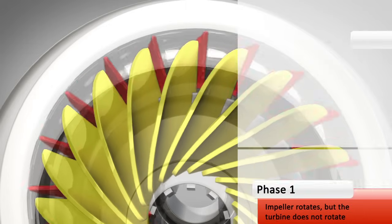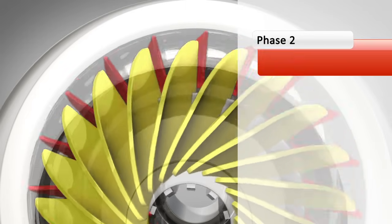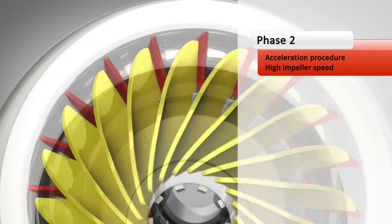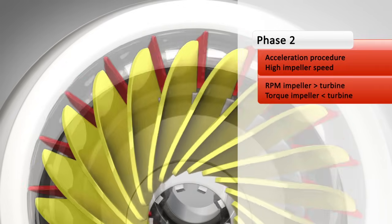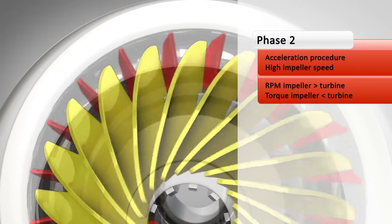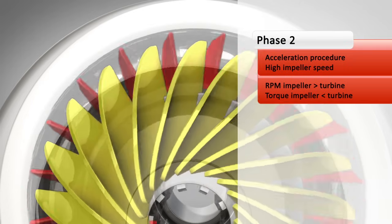The second phase is called acceleration, and takes place when the traffic lights turn green. The brakes are not applied, and the driver presses the accelerator pedal. Consequently, the impeller rotates faster, but there is a relatively large difference between impeller and turbine speed. Under this condition, the converter produces torque multiplication. For acceleration, this torque multiplication is needed.